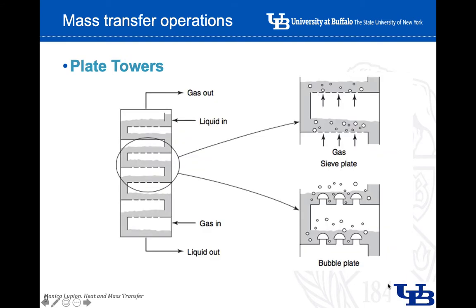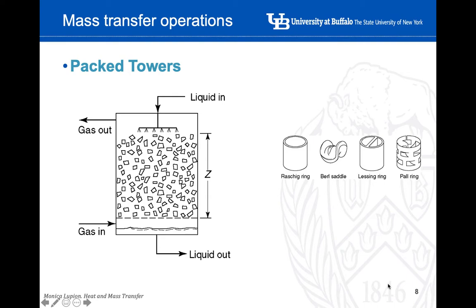There are different packing materials that can be used depending on the type of liquid and gas in the system. One thing to mention is that packed towers can be more efficient compared to a tower without any packing material. However, the downside is that we need to put more energy into the process to overcome the pressure loss — the delta P. So you need more energy for the gas and liquid to flow through the packed tower.